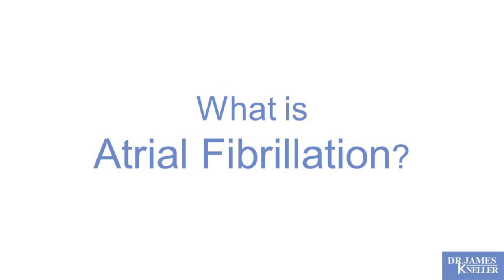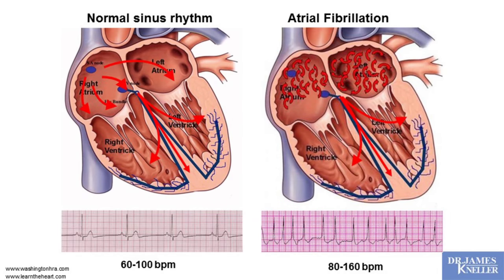What is atrial fibrillation? Here we see a schematic of a heart in normal sinus rhythm — a perfectly normal heart rhythm. We know that the heart rhythm initiates in the top chambers of the heart, spreads across those chambers to engage the bottom main pumping chambers, which then contract pumping blood to the body. It's this electrical signal that coordinates the pumping chambers.